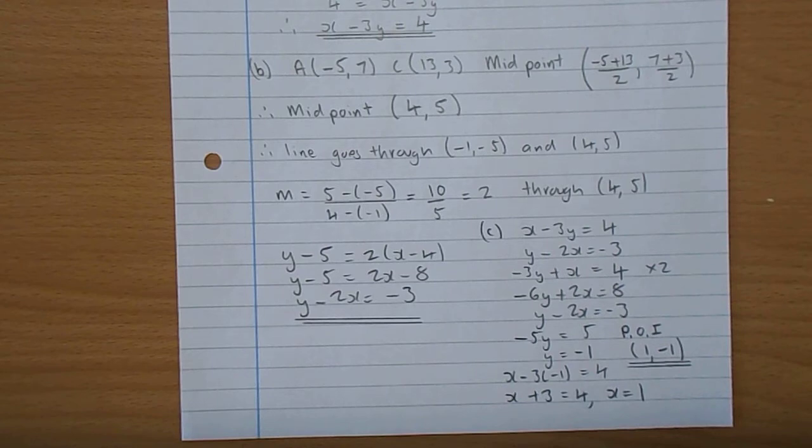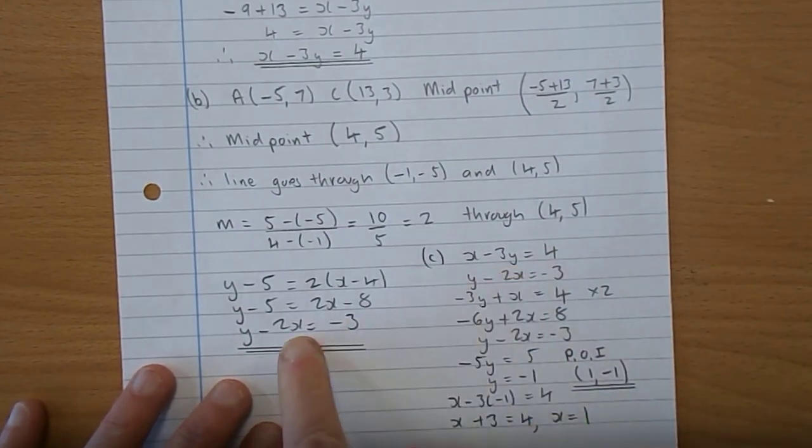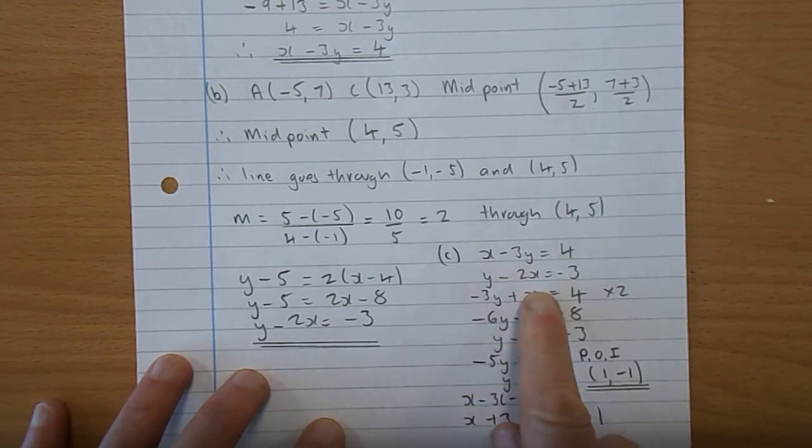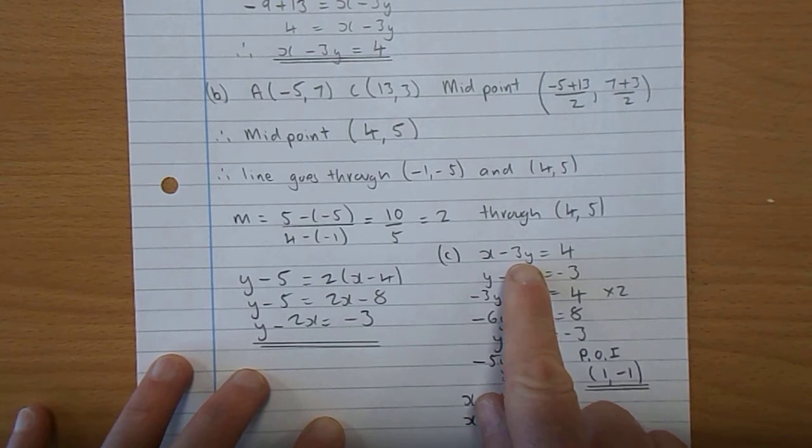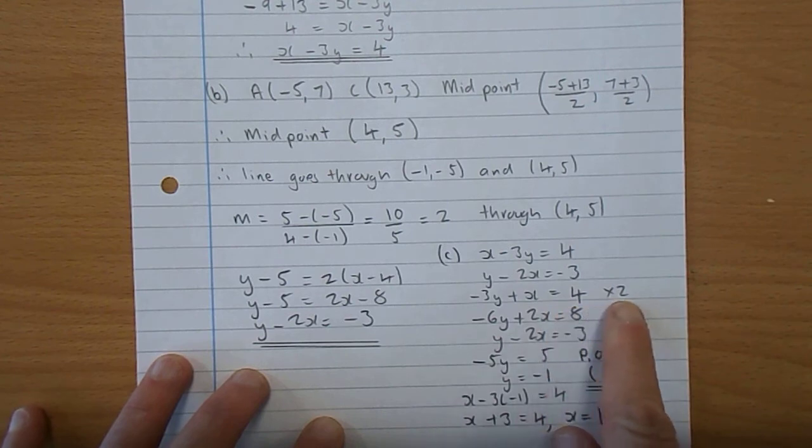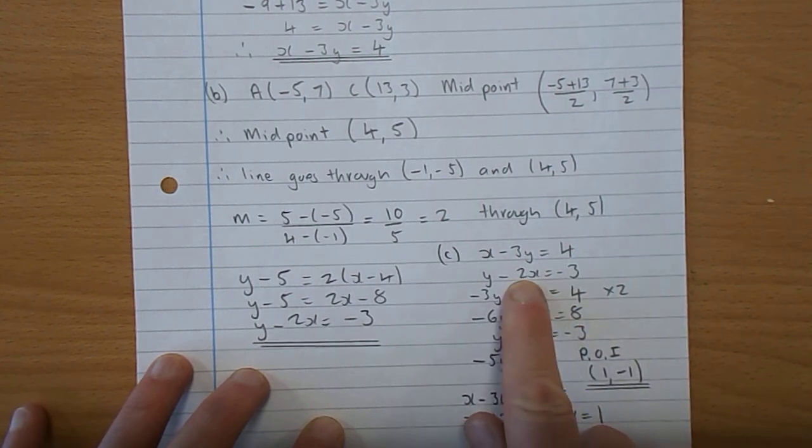And part C is find the point of intersection. So there we have it. First of all, we have X take 3Y is 4, and we have Y take 2X is minus 3. Now, the first thing you might realize is that the X's and the Y's are not above each other as we would normally have. So what I've done is I've swapped these around. Minus 3Y plus X is 4. And I'm now going to double it to give you minus 6Y plus 2X gives 8. I'm going to bring this one, Y take 2X is minus 3, just down here.